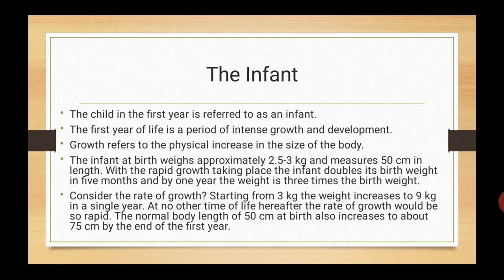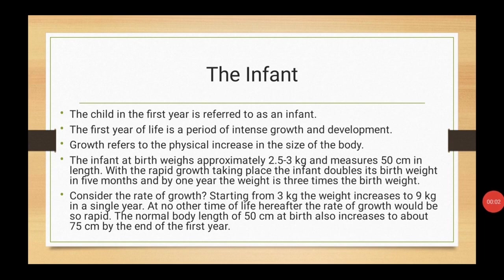Who is an infant? The child in the first year is referred to as an infant. This first year of life is a period of intense growth and development, i.e. physical increase in the size of the body. The infant at birth weighs about 2.5 to 3 kg and measures 50 cm in length. With rapid growth taking place, the infant doubles its birth weight in 5 months, and by 1 year the weight is 3 times the birth weight, i.e. about 9 kg, and length is 75 cm.